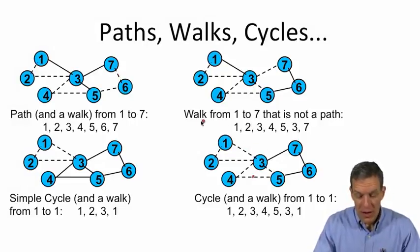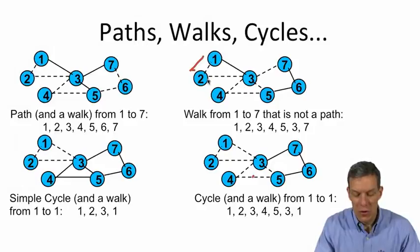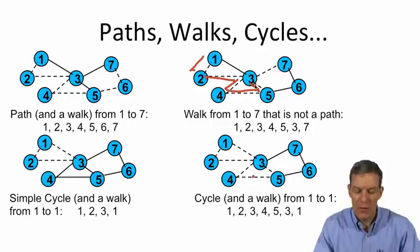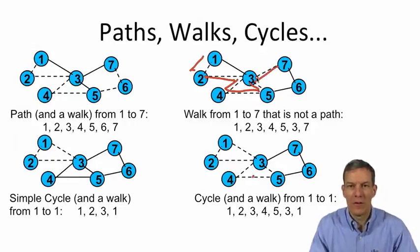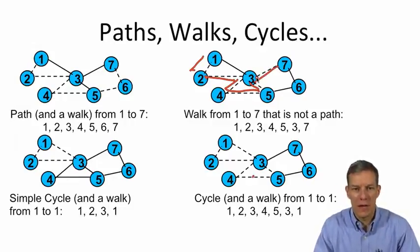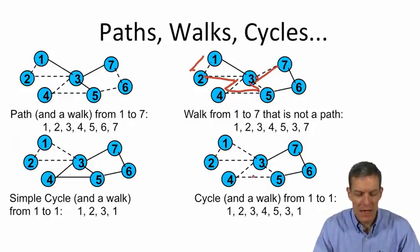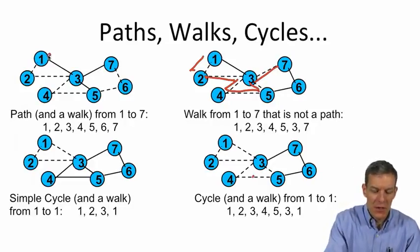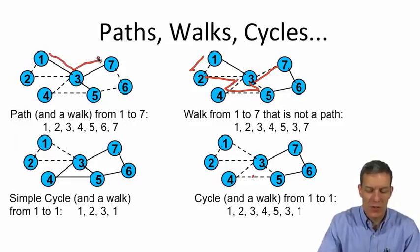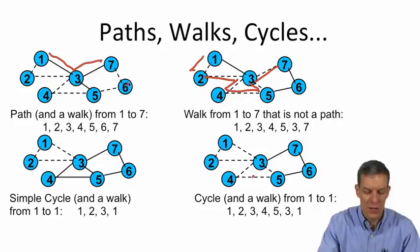If we look at a walk that's not a path we could have gone from one to two, two to three, three to four, four to five, five back to three, and so now we've hit three twice and then gone to seven. So that's a walk that's not a path. And if we wanted the geodesic in this case from one to seven, then the shortest path would actually have gone just one three to seven. So this is a path which is longer than a geodesic.